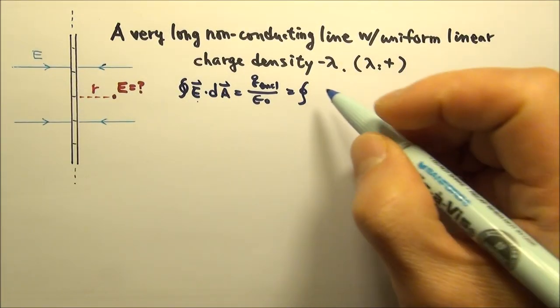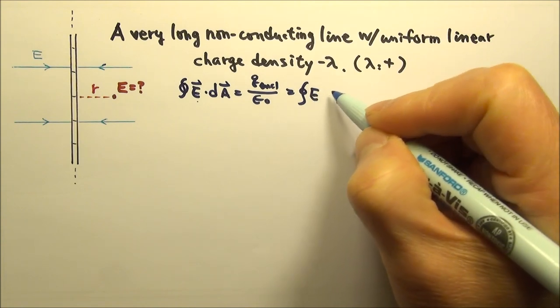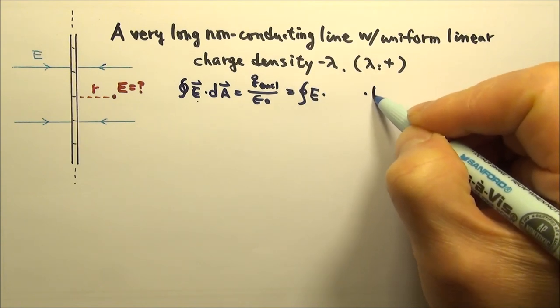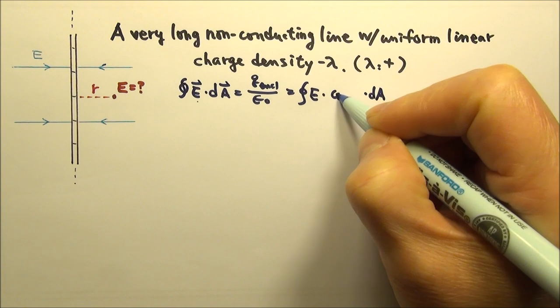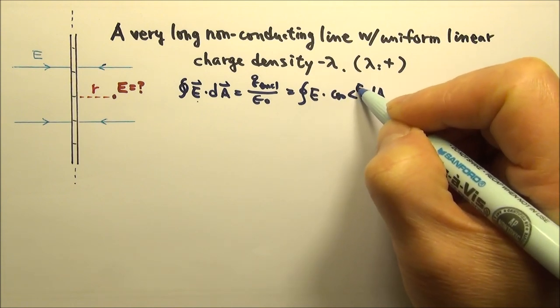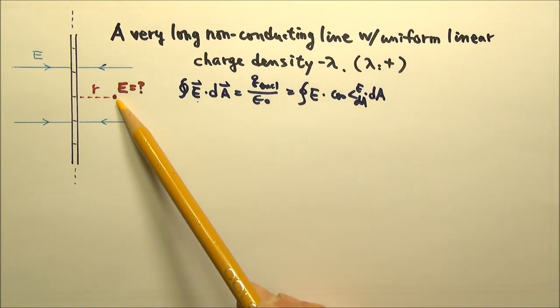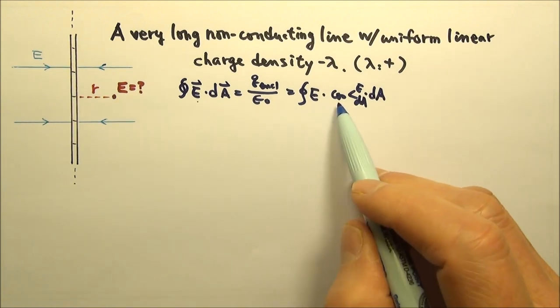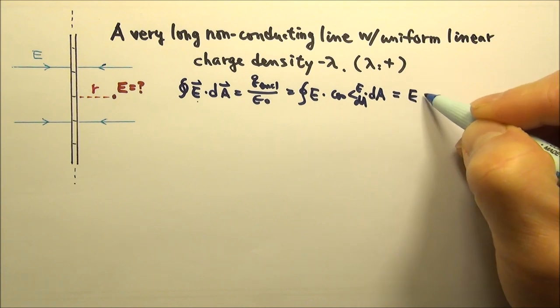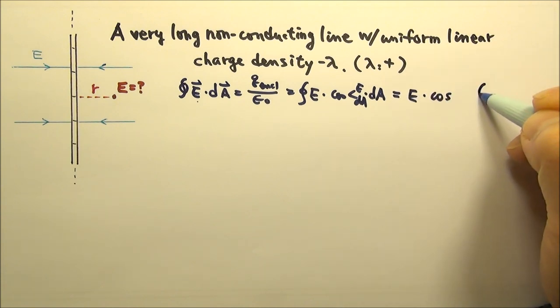E dot dA equals the magnitude of E times the magnitude of dA times cosine of the angle between E and dA. As discussed in the previous video, when we use Gauss's law to find the electric field, we need to make a Gaussian surface that goes through the location we are interested in, and we need E and cosine to be constants so we can take them out of the integral.